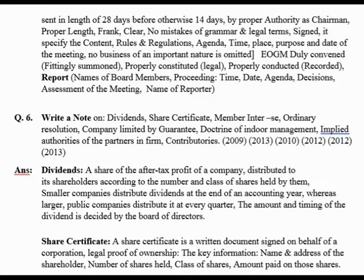Smaller companies distribute dividends at the end of the accounting year, while larger or public companies distribute at every quarter — every 3 months. The amount and timing of dividends is decided by the board of directors.